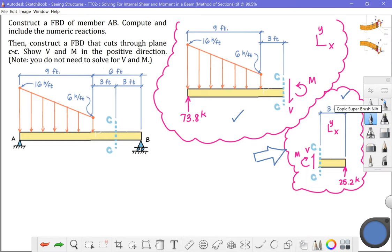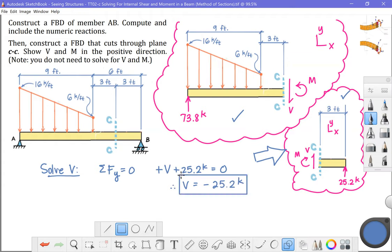We would like to solve for the shear force V. Summation of forces in the y direction equals zero. Unknown V is pointing upwards, positive. 25.2 kips is upward positive, set that equal to zero. And so we will get a negative shear force for the solution of V, negative 25.2 kips.